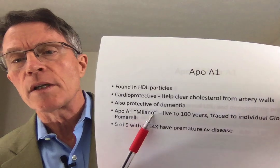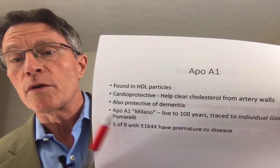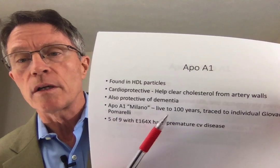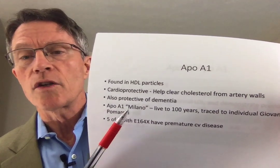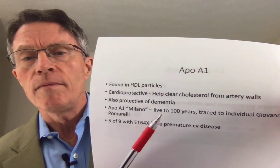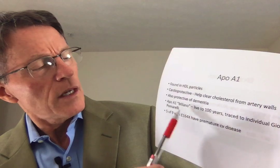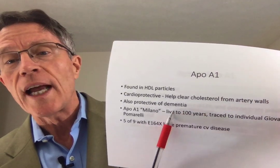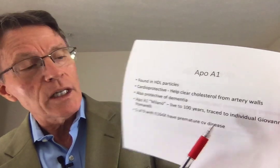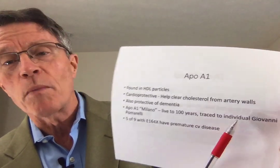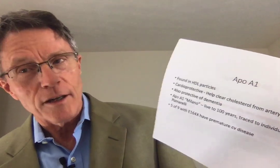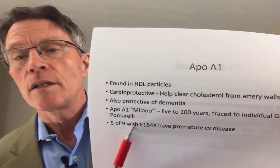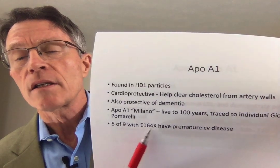There have been some interesting findings with ApoA1 mutations — single nucleotide polymorphisms, or SNPs — genetic variations in these proteins. One called ApoA1 Milano: individuals with this version of ApoA1 tended to live to one hundred years. This was traced back to Giovanni Pommarelli, who lived about an hour away from Milan. Another variant, E164X, was not a healthy one — five out of nine of those individuals will get premature cardiovascular disease.